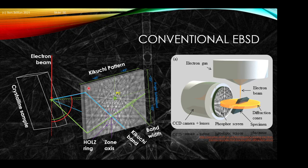One important aspect of the EBSD experiment, as compared to capturing a Kikuchi pattern in the TEM, is that we have a very short camera length so we subtend a very large angle — often 90 degrees or greater. This enables us to see a large portion of diffraction space, which is very useful when we want to determine crystal orientation or the crystal phase present.